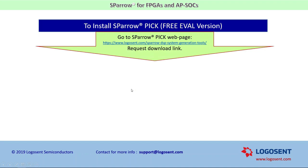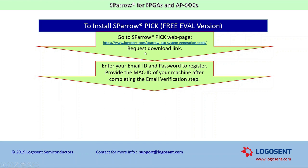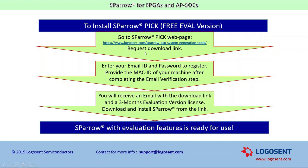To install Sparrow Pic, which is a free eval version, on your PC, go to the Sparrow Pic webpage from the Sparrow Generation Tool homepage. Click on the Request Download link. Enter your email ID and password to register. Provide the MAC ID of your machine after completing the email verification step. You will receive an email with a download link and a 3-month evaluation version license. Download and install Sparrow from the link. Sparrow with evaluation features is ready for use.